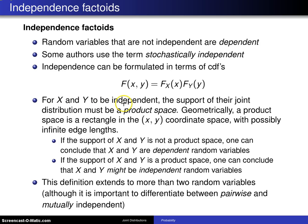For x and y to be independent, the support of their joint distribution must be a product space. Geometrically, a product space is a rectangle in the x y coordinate space, possibly with infinite edge lengths.